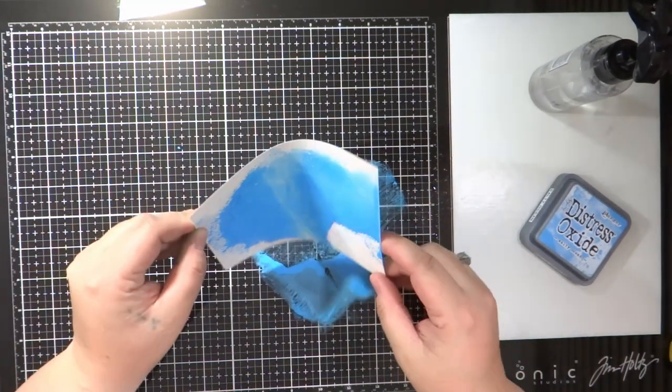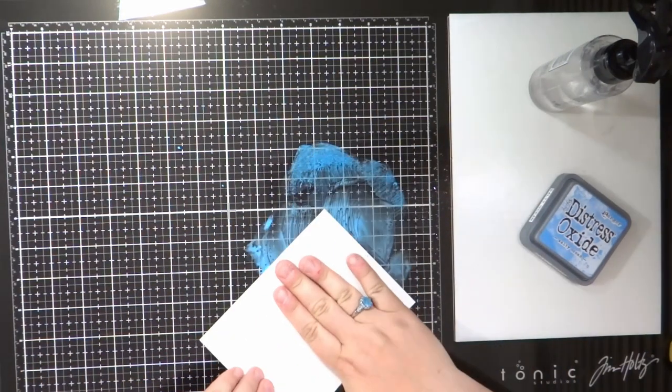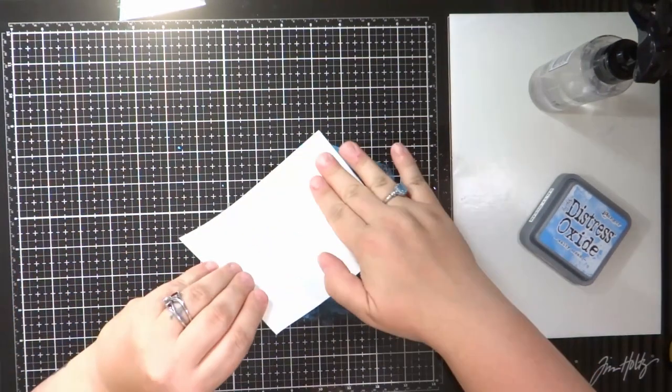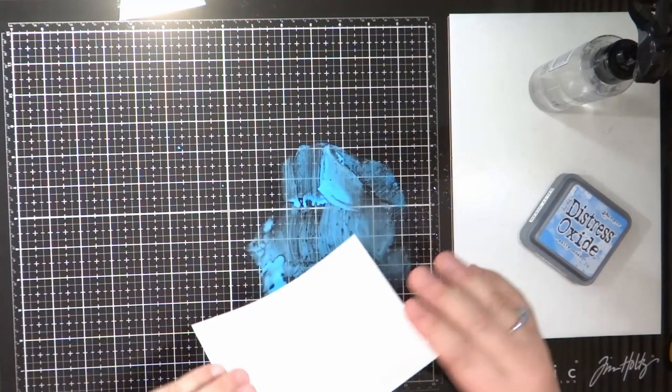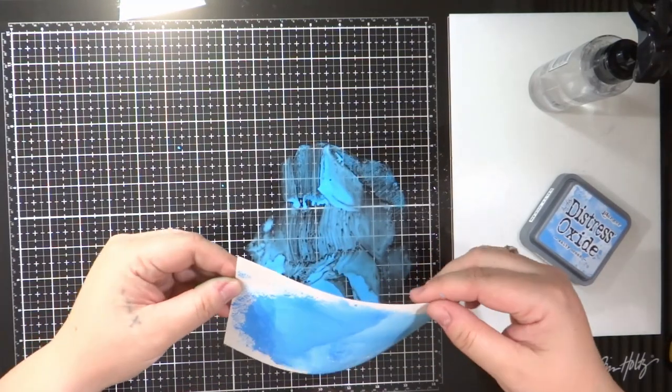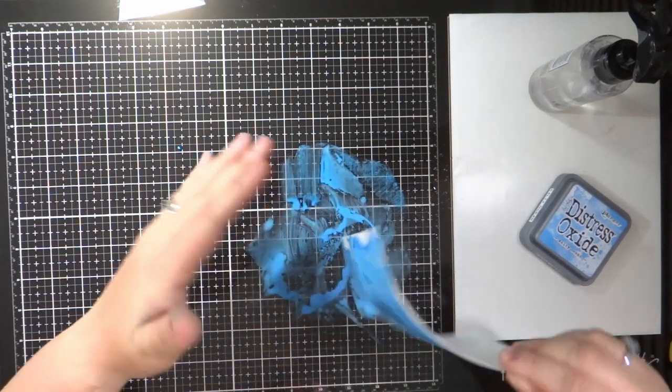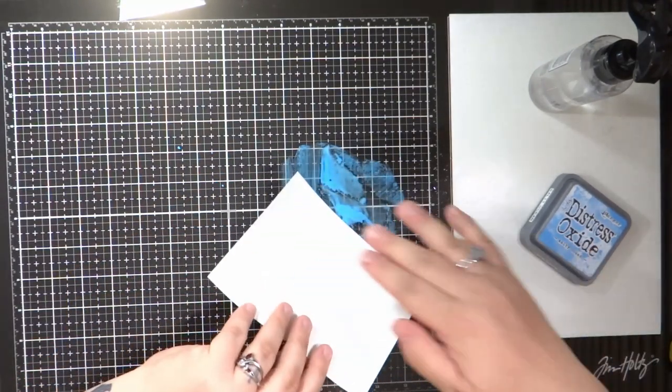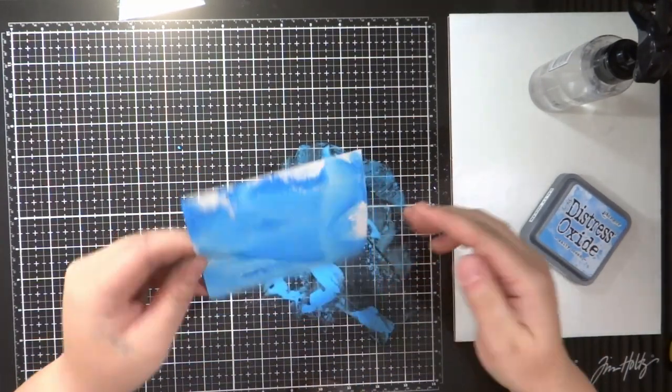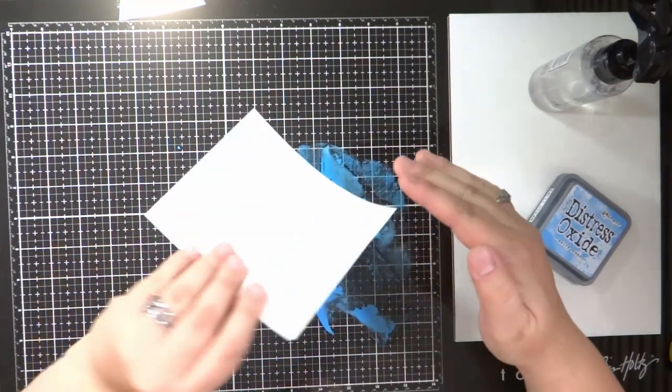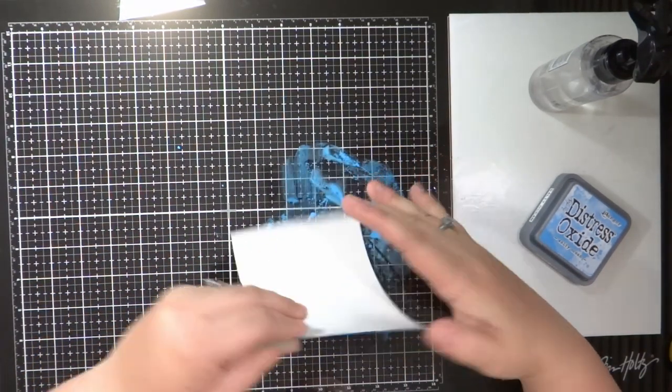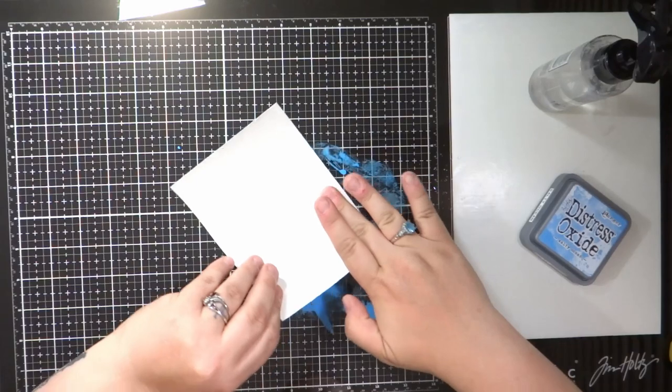I spritzed it with some water. I'm going to push this Canson watercolor cardstock into it. And you can see it picks up and it really picks up the ink very nicely and then I can keep dipping it back into it to get the coverage that I want.